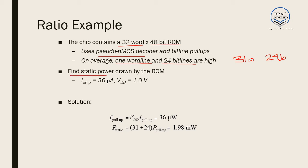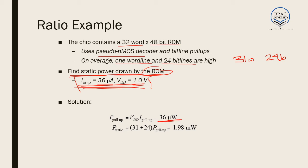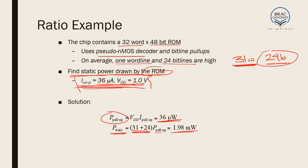Let us look at an example about power. A chip contains 32-word and 48-bit ROMs. It uses pseudo-NMOS logic and on average one word line and 24 bit lines are high, meaning 31 word lines and 24 bit lines are low on average. The static power drawn by HPMOS for the pull-up network is 36 micro-ampere and VDD is 1 volt. Since static power is 36 micro-ampere and VDD is 1 volt, total power per MOSFET becomes 36 micro-watt. This static power is effective when the output is low. The number of MOSFETs with low output is 31 (word lines) plus 24 (bit lines), so total static power is (31 + 24) × 36 μW = 1.98 mW.